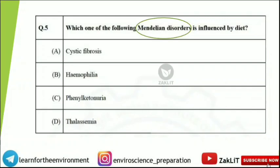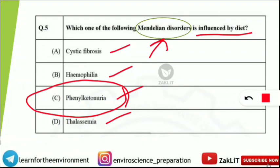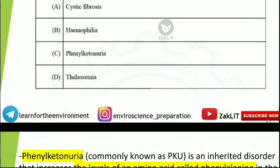The next question asks: which one of the following Mendelian disorders is influenced by diet? The options are cystic fibrosis, hemophilia, phenylketonuria, or thalassemia. The correct option is C: phenylketonuria. Mendelian disorders are very important for the GATE ecology and evolution paper — you should know how they occur in organisms and what their effects are. A separate video on Mendelian disorders will be made.